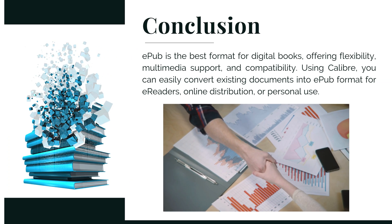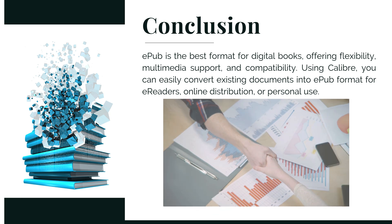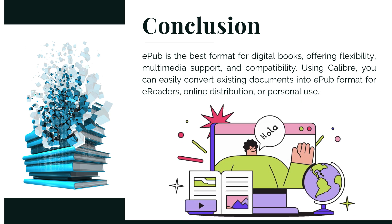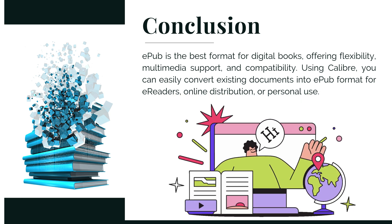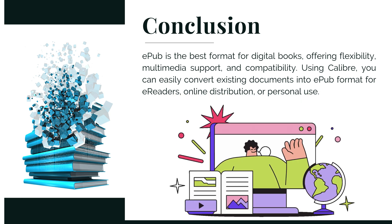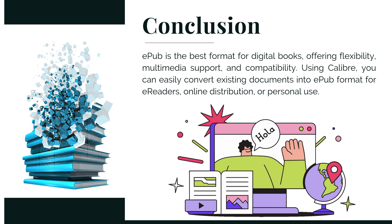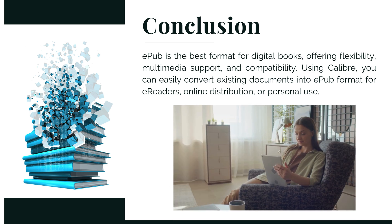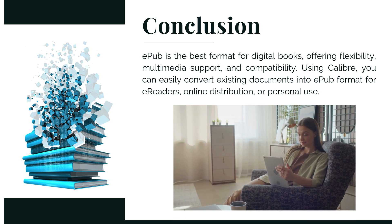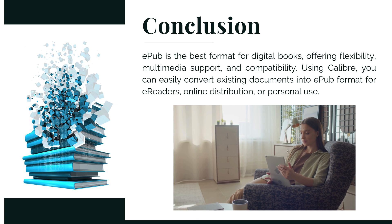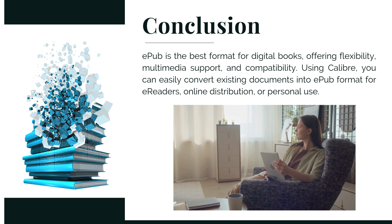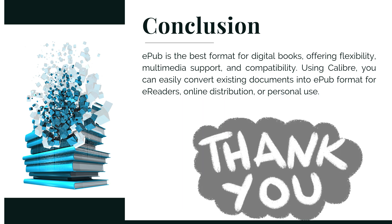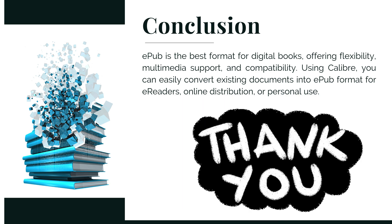Conclusion: EPUB is the best format for digital books, offering flexibility, multimedia support, and compatibility. Using Calibre, you can easily convert existing documents into EPUB format for e-readers, online distribution, or personal use.